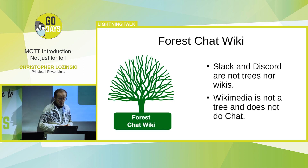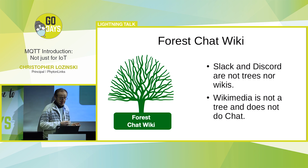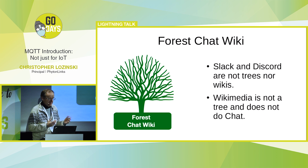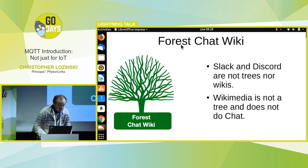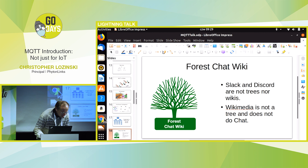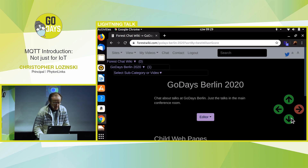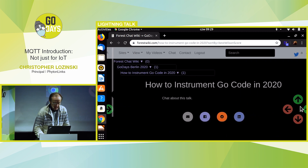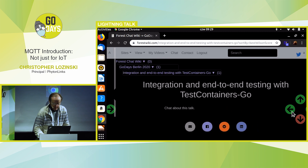I actually built a forest chat wiki. Slack and Discord — they're not trees and they're not wikis. Wikimedia — it's not a tree and it does not do chat. Here we have GoDays. This is the wiki piece. Here we have GoDays Berlin, and there are different chat rooms for each of the different talks. You can scroll through a much bigger tree.